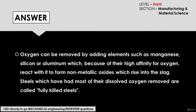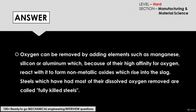Oxygen can be removed by adding elements such as manganese, silicon, or aluminum. Because of their high affinity for oxygen, they react with it to form non-metallic oxides, which rise up into the slag. Steels which have had most of their dissolved oxygen removed are known as fully killed steels.